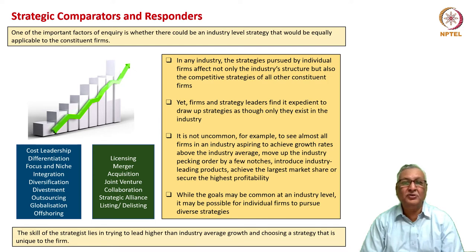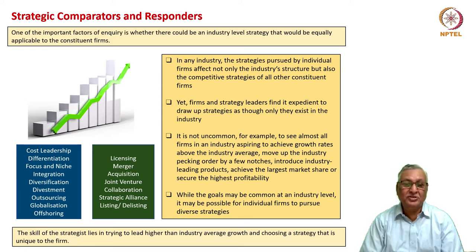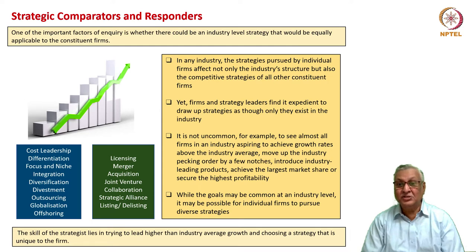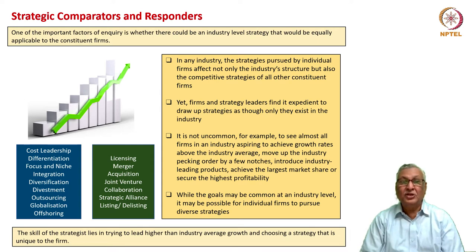One important factor is whether there could be an industry-level strategy equally applicable to all constituent firms. But in most cases, it does not work that way. In any industry, strategies pursued by individual firms affect not only the industry structure but also the competitive strategies of all other firms. If everybody follows the same strategy, the entire industry is one strategic group; if each strategy is unique, there will be as many strategic groups as there are firms.